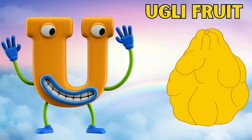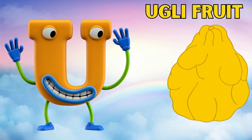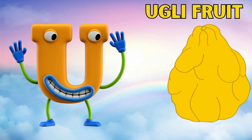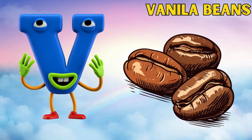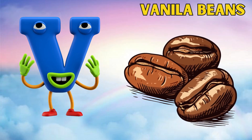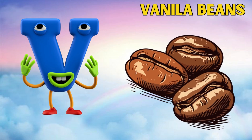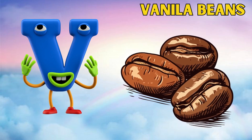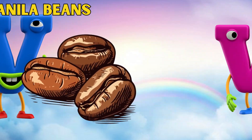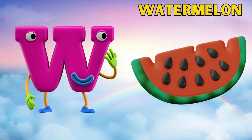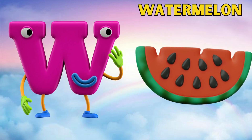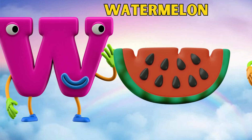U is for ugly fruit, u-u-u-ugly fruit. V is for vanilla beans, v-v-v-vanilla beans. W is for watermelon, w-w-watermelon.